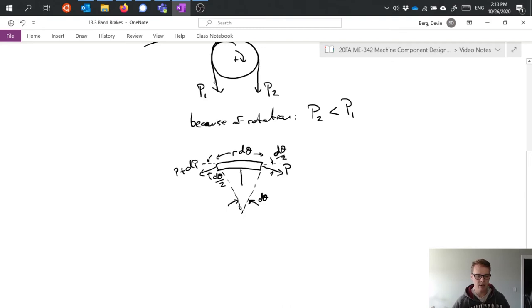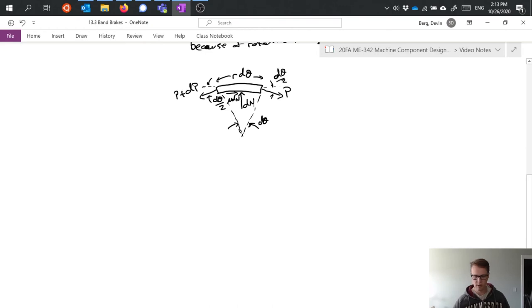And finally, we have some normal force dN acting on it like this. And then we have a friction force mu dN acting on it as well. So that's the friction force due to the drum rotating against this small chunk of material.